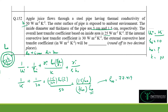Rounding to two decimal places, the value of H_o is approximately 77.42 W/(m²·K). Hence the answer for question 152 is 77.42 W/(m²·K).